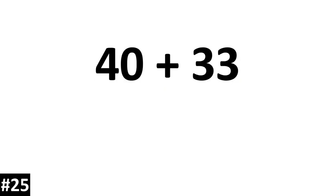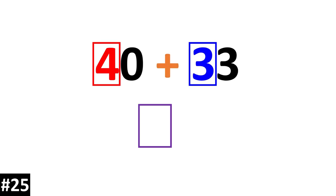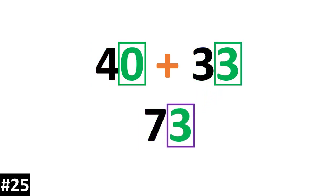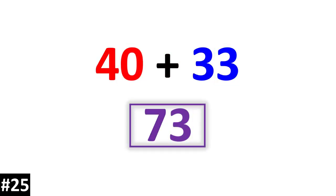And lastly, 40 plus 33. 4 tens plus 3 tens is equal to 7 tens. We add the ones: 0 plus 3 is 3. And 40 plus 33 is 73.